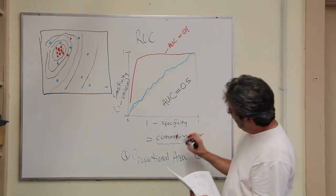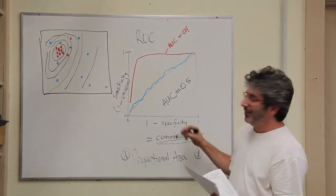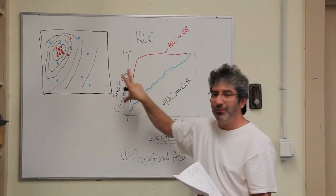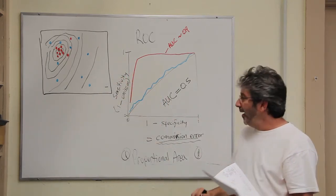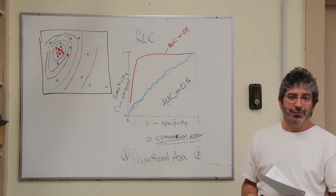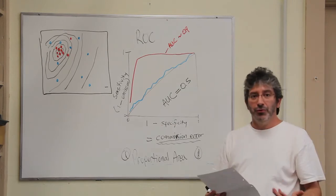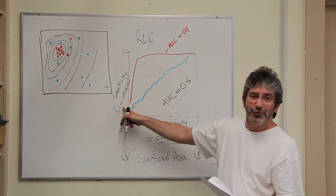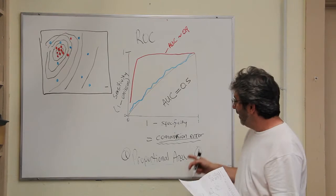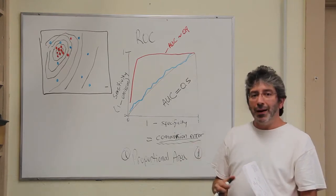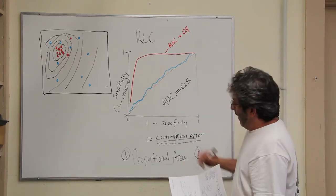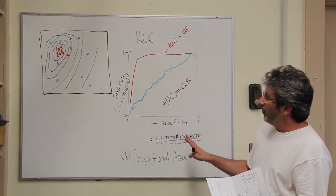It's not ideal, and we could talk about for quite a while whether that's a good idea. A second complication is that the commission error-related axis and the omission error-related axis have the same scaling in ROC-AUC. In many senses, we've weighted commission and omission errors equally. That's a big problem because, as you already know, omission error refers to presence data, which we generally have reason to believe in, and commission error refers to absence data, which we should have a lot of worries about.